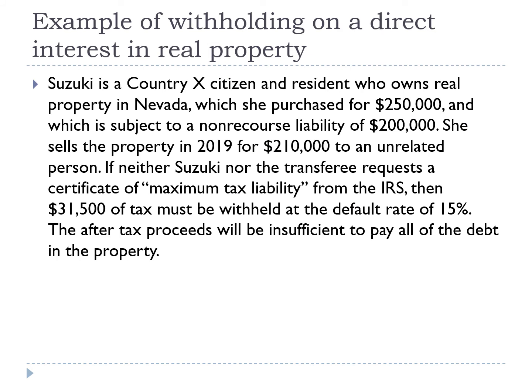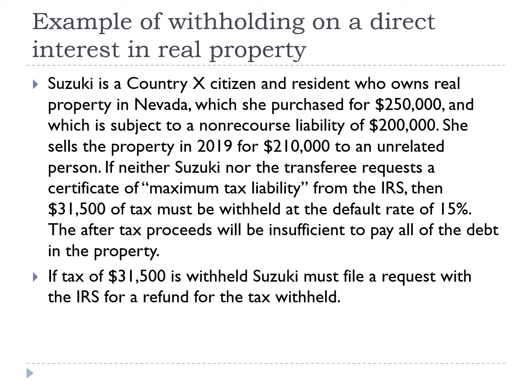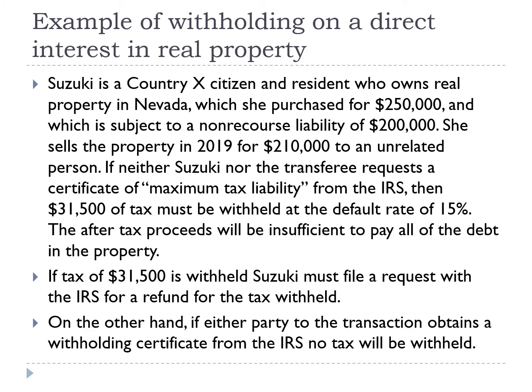Here's an example of withholding on the disposition of a direct interest in real property. Suzuki is a Country X citizen and resident who owns real property in Nevada, which she purchased for $250,000 and which is subject to a non-recourse liability of $200,000. She sells the property in 2019 for $210,000 to an unrelated person. If neither Suzuki nor the transferee requests a certificate of maximum tax liability from the IRS, then $31,500 of tax must be withheld at the default rate of 15%. The after-tax proceeds will be insufficient to pay all of the debt on the property. If $31,500 is withheld, Suzuki must file a request with the IRS for a refund. On the other hand, if either party obtains a withholding certificate from the IRS, no tax will be withheld.